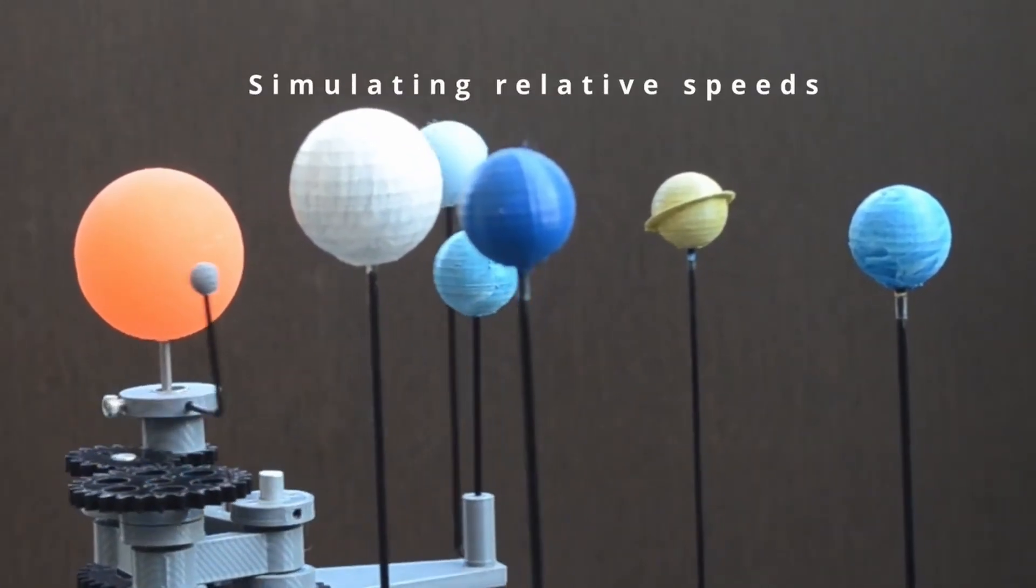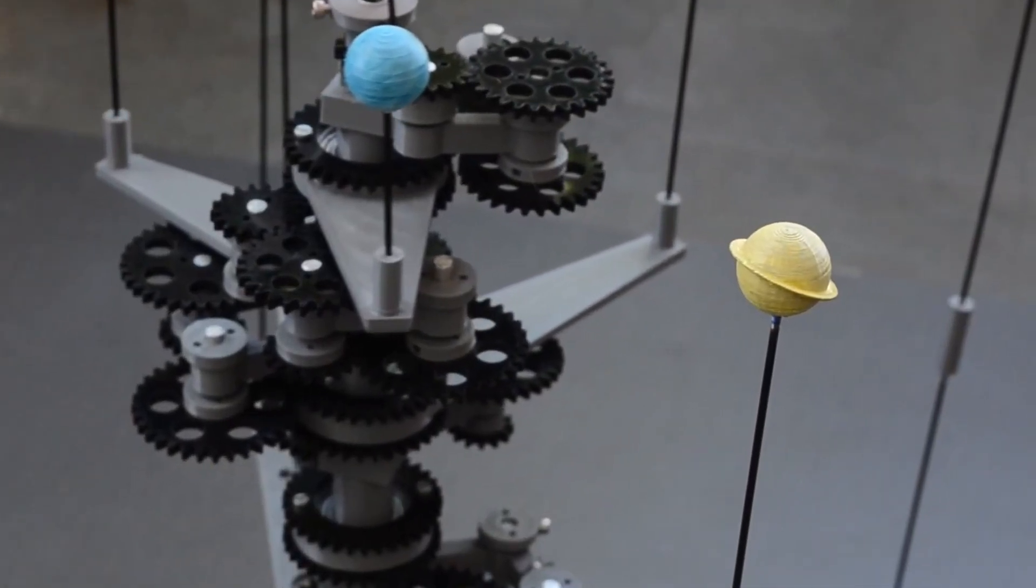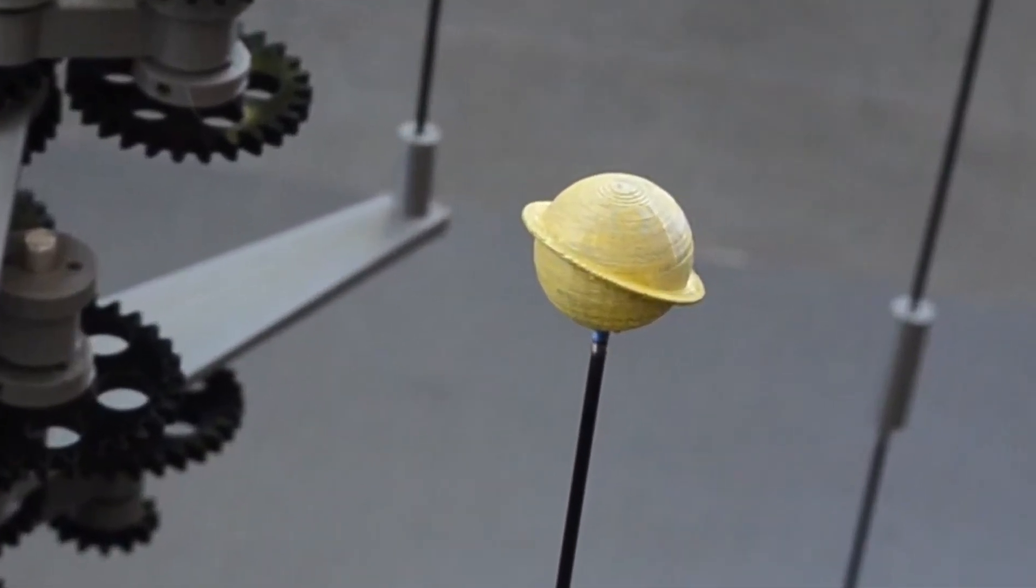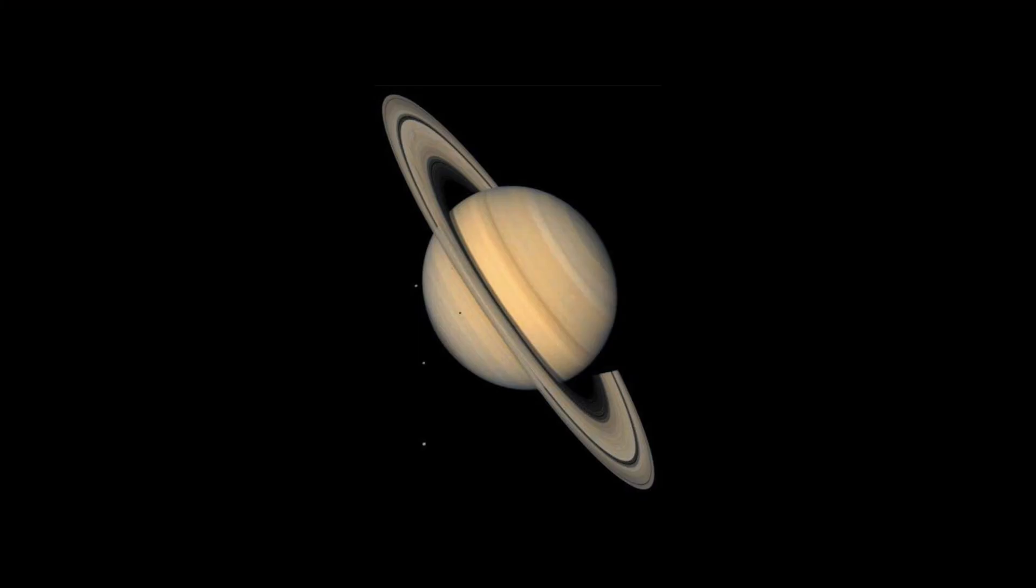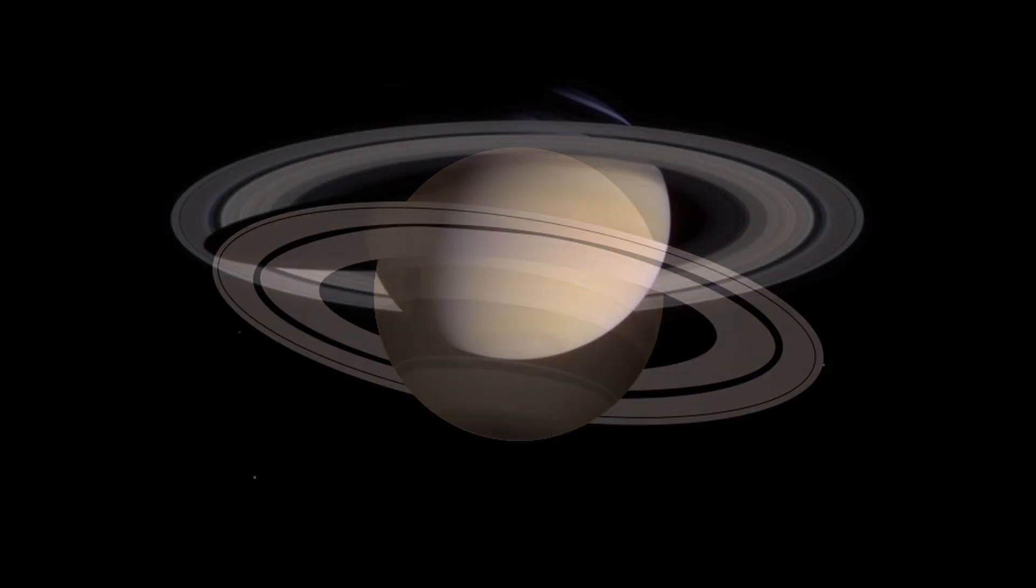There are 8 planets in our solar system. This is Saturn, one of the most fascinating planets. Saturn is also famous for its extensive ring system.